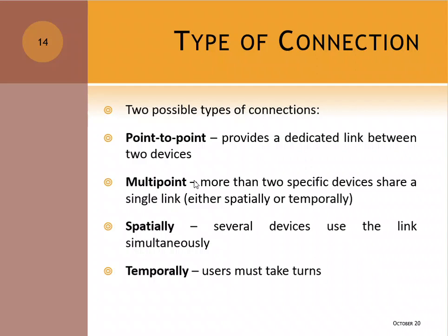In networking, we need to know the type of connection. There are two possible types of connections: point-to-point and multi-point. Point-to-point provides a dedicated link between two devices, meaning that one link is shared only by two devices, not more than two.